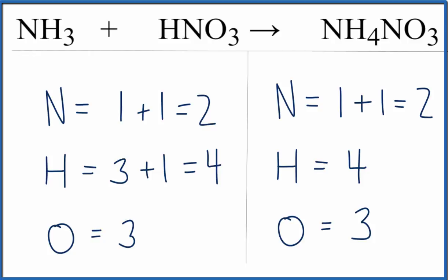Where people have problems is they don't count up all of the nitrogens, for instance. So you can see we have one nitrogen here, and then one here. They'll forget about the second one, or the same for the hydrogens.